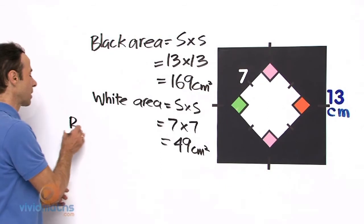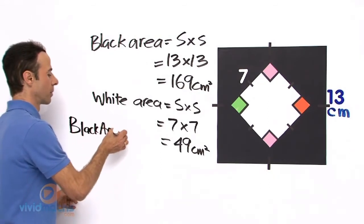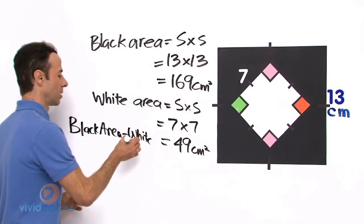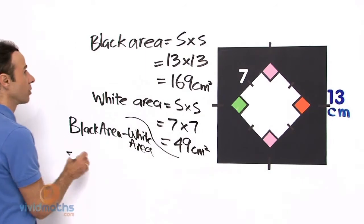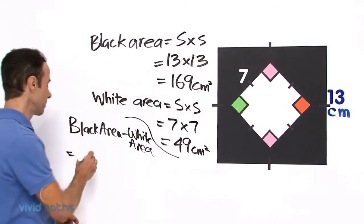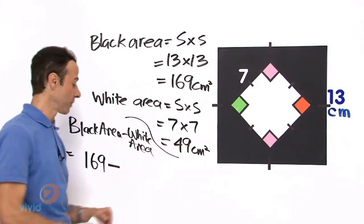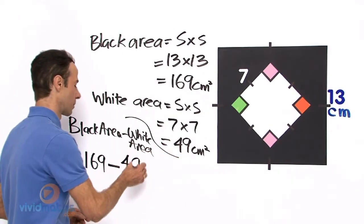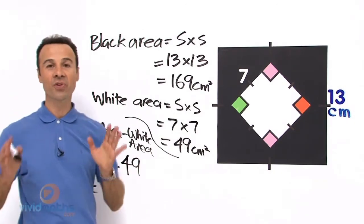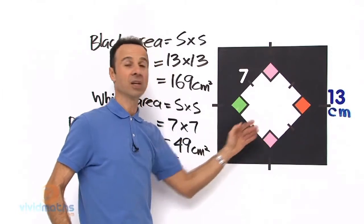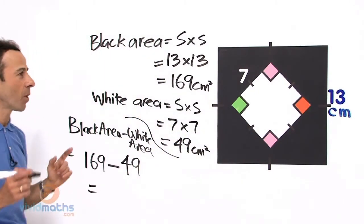So black area minus white area is going to equal 169 minus 49 and that is going to give us a grand total of the shaded black area, just the black excluding the white. The final answer is 169 minus 49.